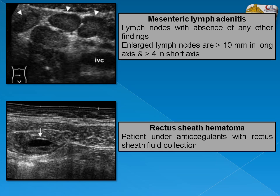In mesenteric lymphadenitis, enlarged lymph nodes are present — more than 10 mm in long axis or more than 4 mm in short axis — with multiple lymph nodes but without any other findings of acute appendicitis. In rectus sheath hematoma, the patient is usually under anticoagulant therapy with a fluid collection within the rectus sheath, which is very superficial and easily seen by ultrasound.